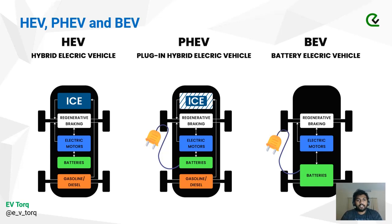There are three major classifications for electric vehicles. The first is HEV — hybrid electric vehicles. The second is PHEV — plug-in hybrid electric vehicles. And the third is BEV — battery electric vehicles.